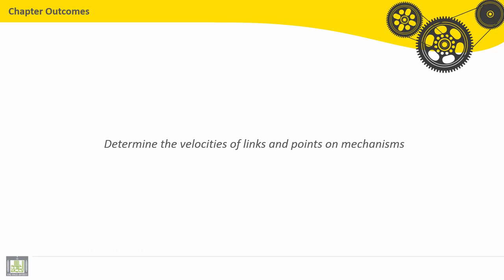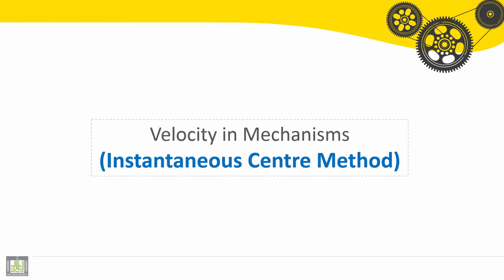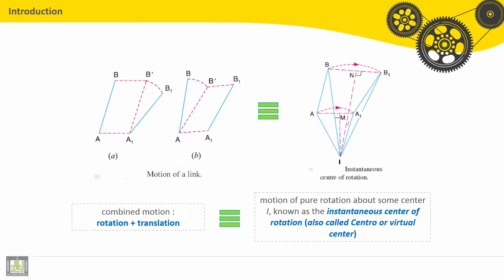As chapter outcomes for this chapter, after completion of this chapter a student will be able to determine the velocities of links and points on a mechanism. We'll start by velocity calculation in a mechanism by instantaneous center method.